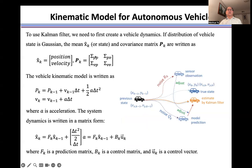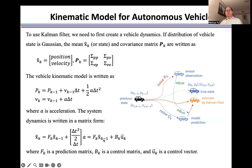To use the Kalman filter, we need to first create a vehicle dynamics model. If the distribution of a vehicle's state is Gaussian, we can characterize the prior state and its covariance matrix. We then define the kinematic model using acceleration, and express the system dynamics in matrix formulation. This allows us to predict the state of the self-driving vehicle from its previous state.